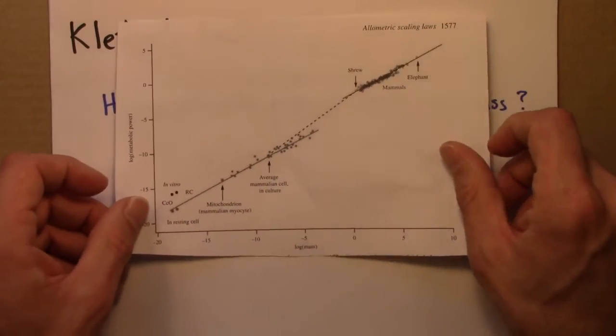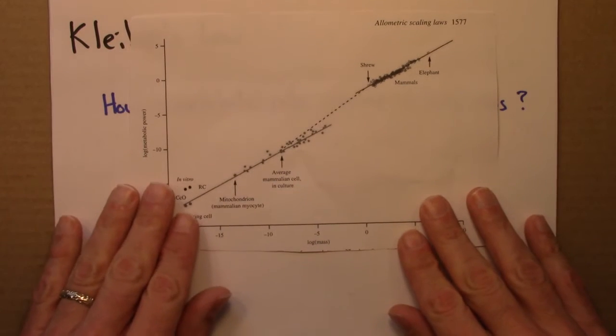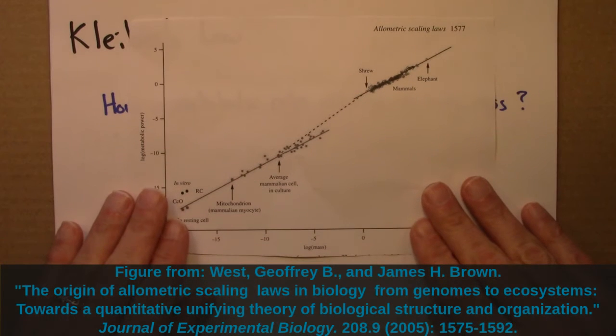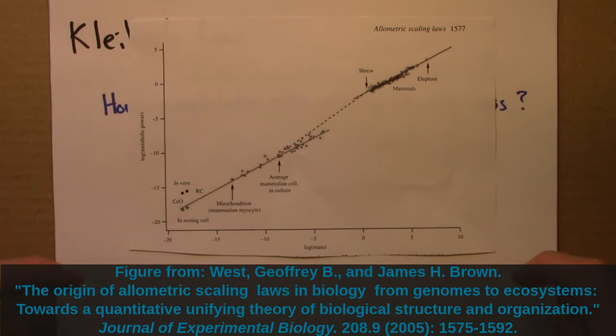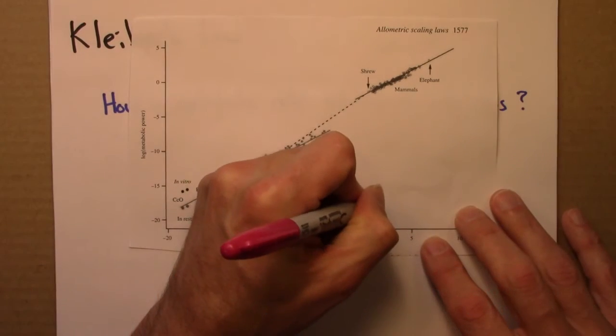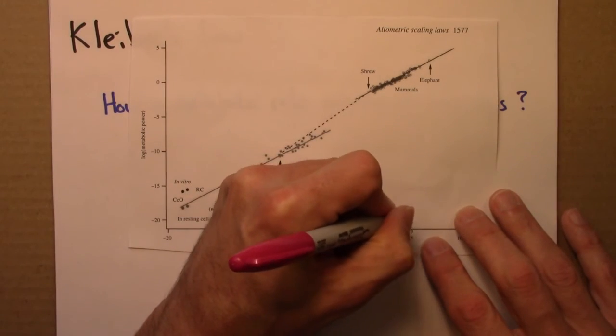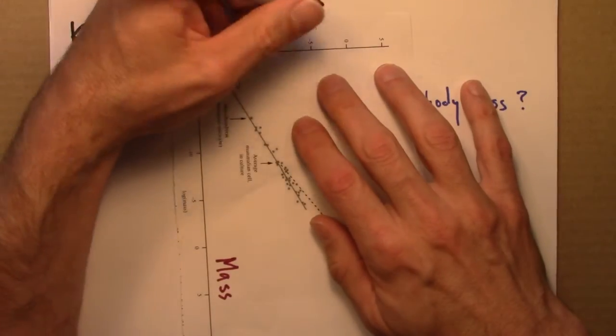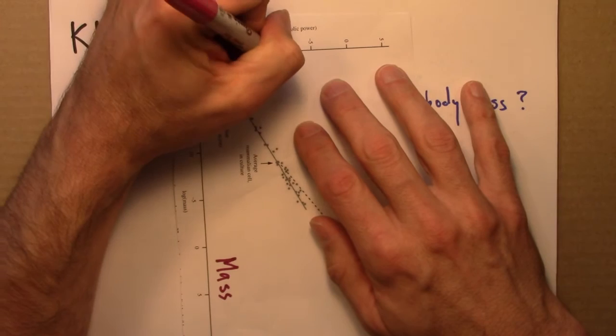So here's a version of what this looks like. This is from a more recent paper. I'll put the reference down here. I think it's West and Brown, I believe they're two authors. So let me draw these labels more clearly. What we have here on a logarithmic scale is mass. And on the vertical axis is metabolic rate.